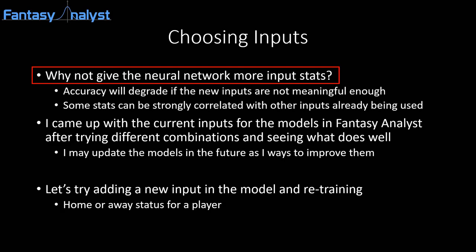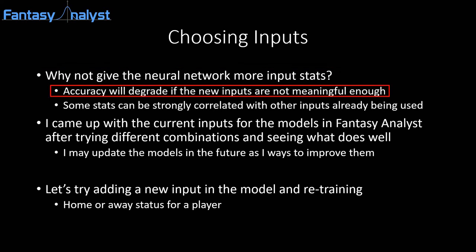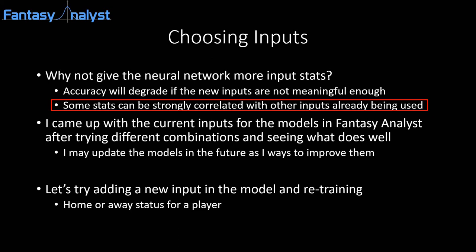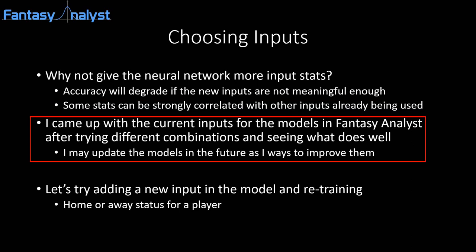You may be wondering: why not feed a lot more stats into the neural network as inputs? Unfortunately, more inputs don't always help, for a couple of reasons. First, if we give the neural network input variables that don't have a significant correlation with our output, accuracy will degrade — the neural network may not give them a small enough weight, effectively creating more noise. In addition, variables that have strong correlations with the output may already have strong correlations with other inputs. For example, if we're already providing a points-per-minute input, adding average fantasy points scored won't give much more information since those two inputs are strongly correlated anyway. I chose the current inputs by experimenting with a wide range of variables and finding what gave the best performance with a manageable number of inputs.